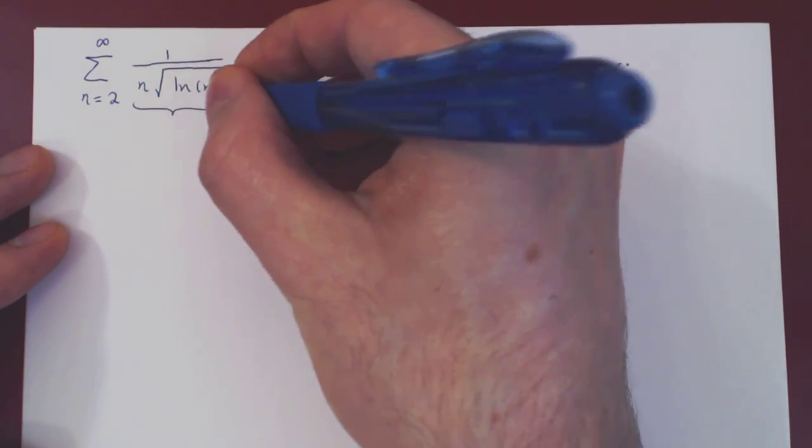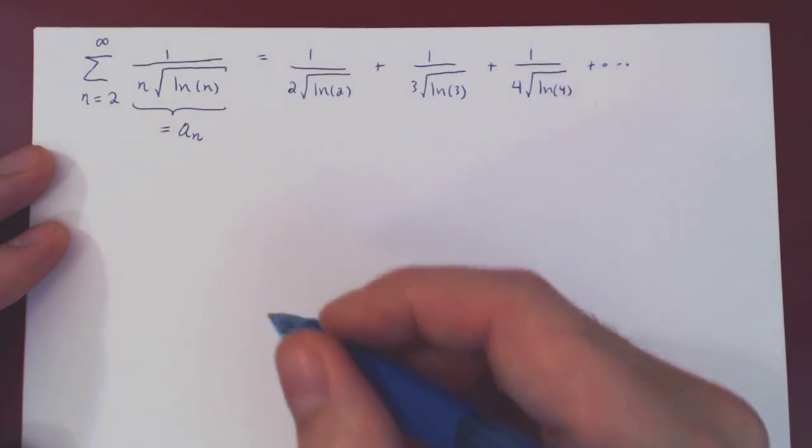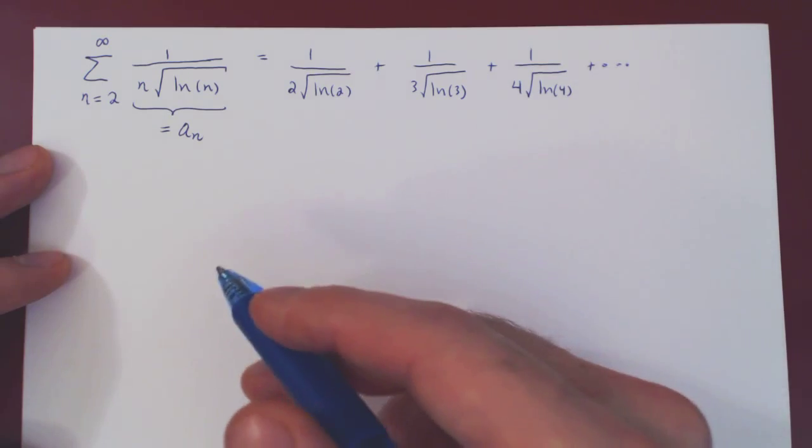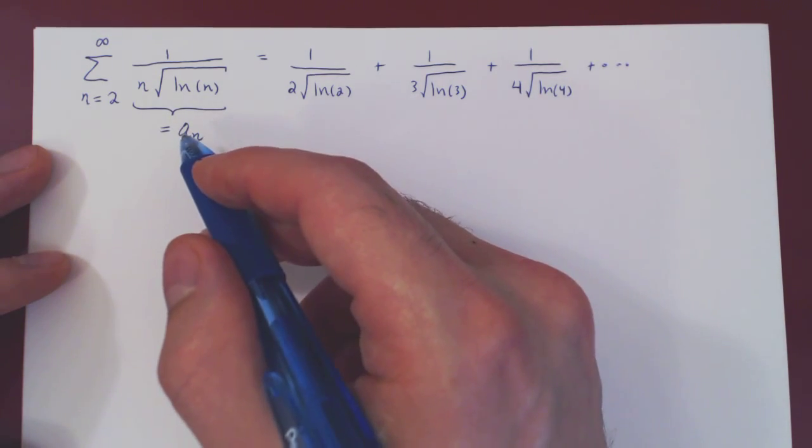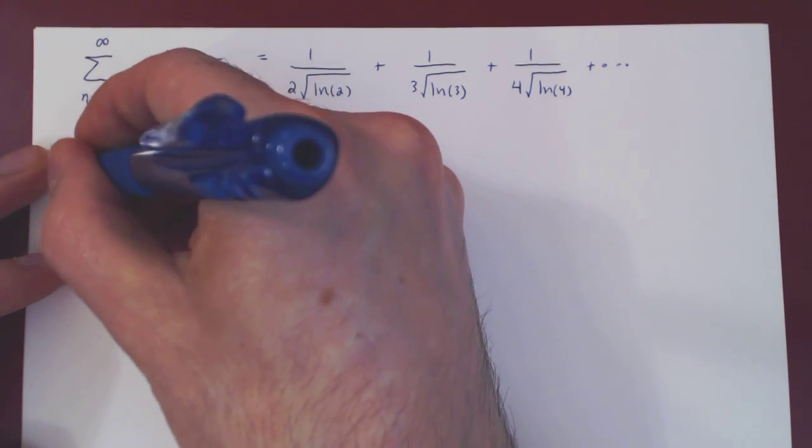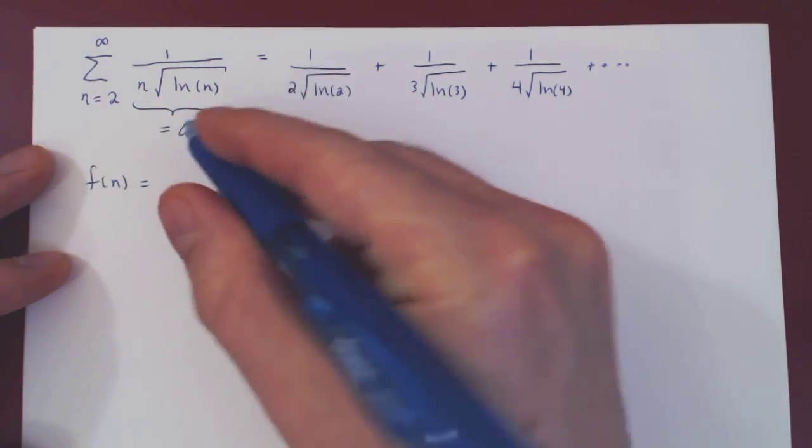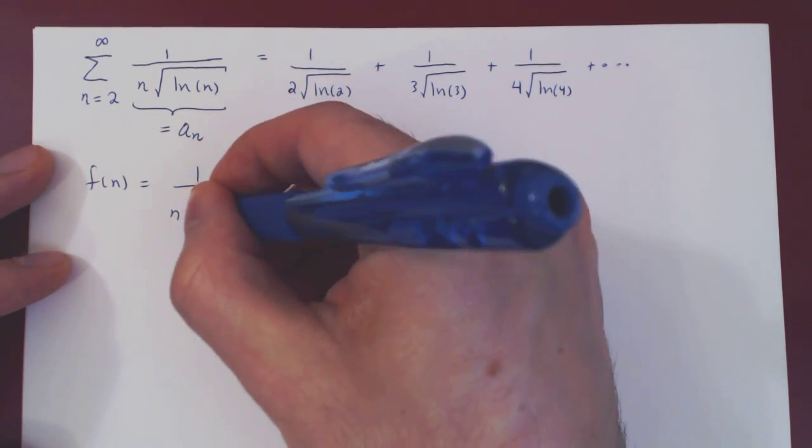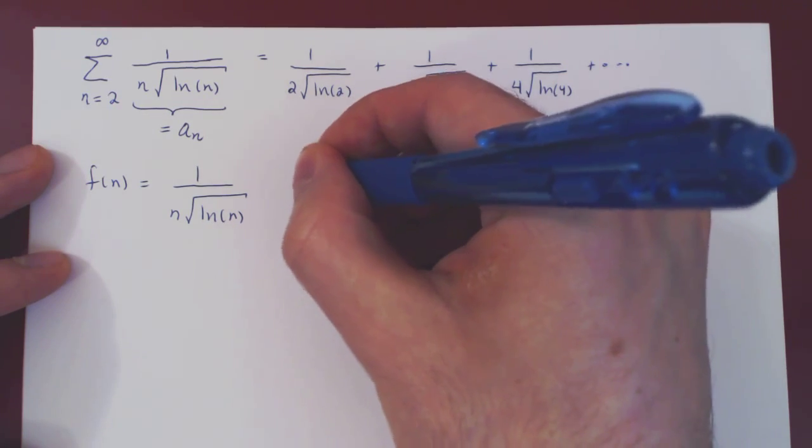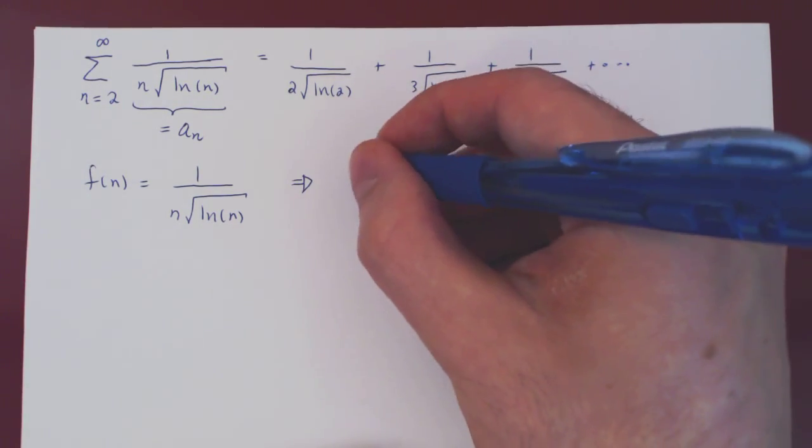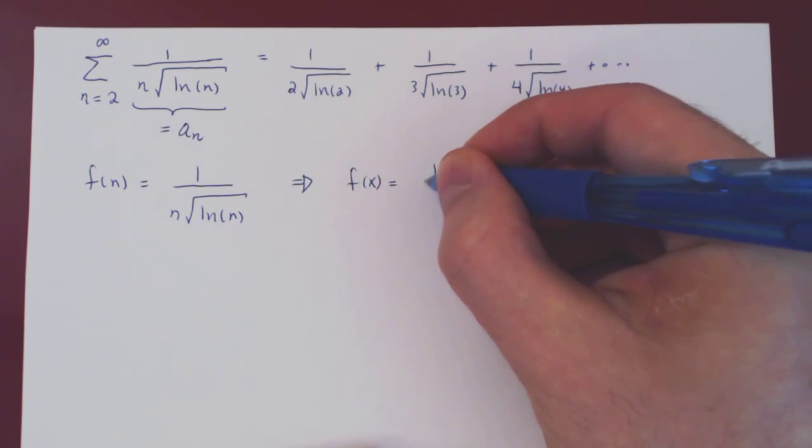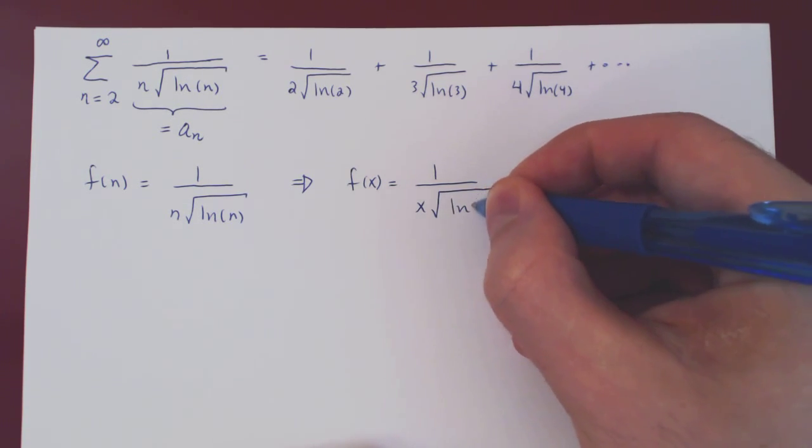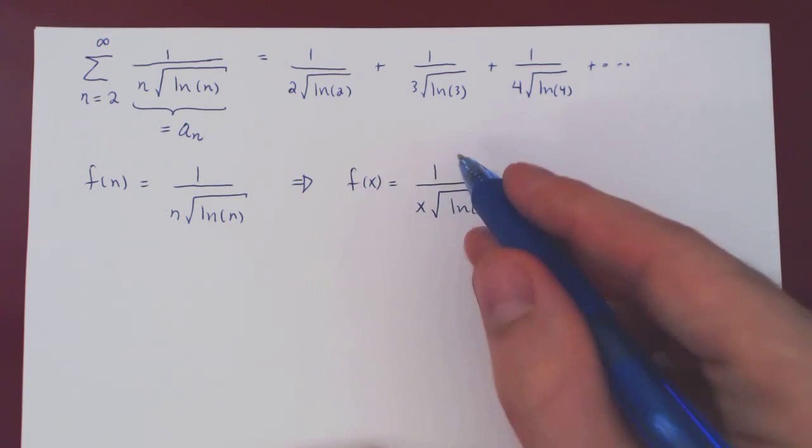Well, here's the nth term of our series. An is 1 over n root of ln of n, and in the integral test we need that f of n equals an. So f of n equals an, so it just has to be 1 over n root of ln of n. And then of course you can clearly see what f of x is replacing n by x. So f of x is 1 over x times the root of ln of x. This is our function.